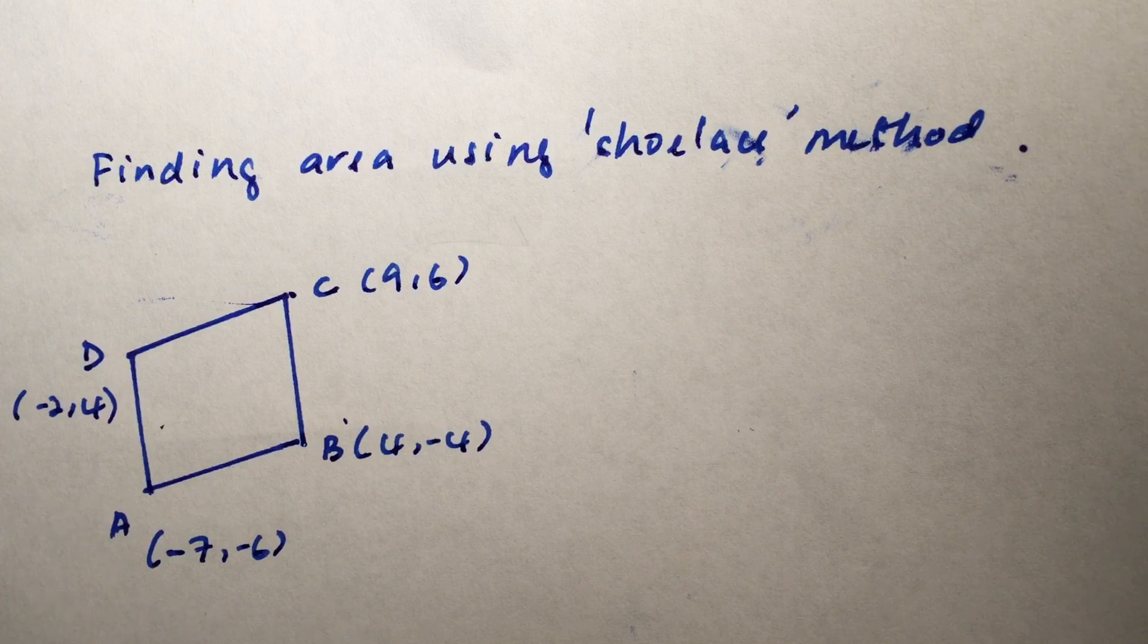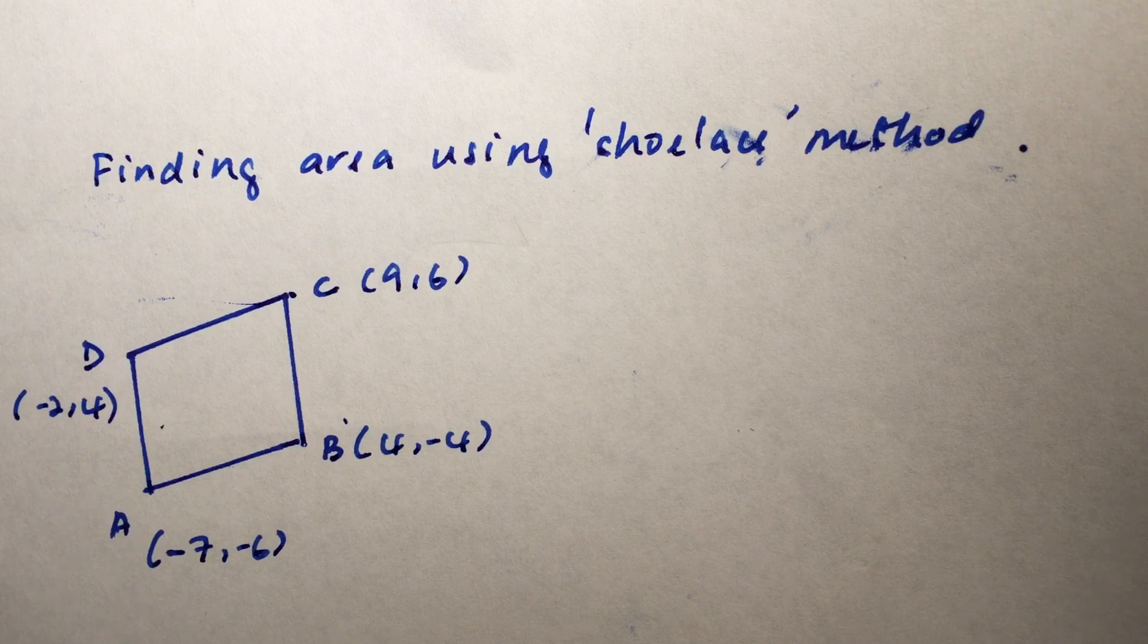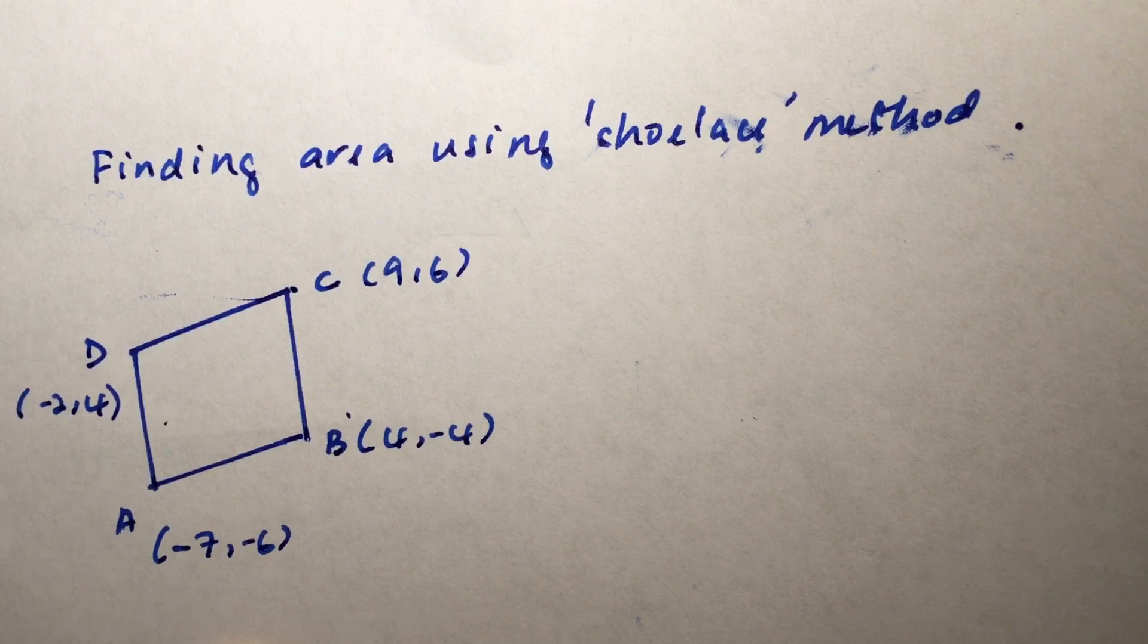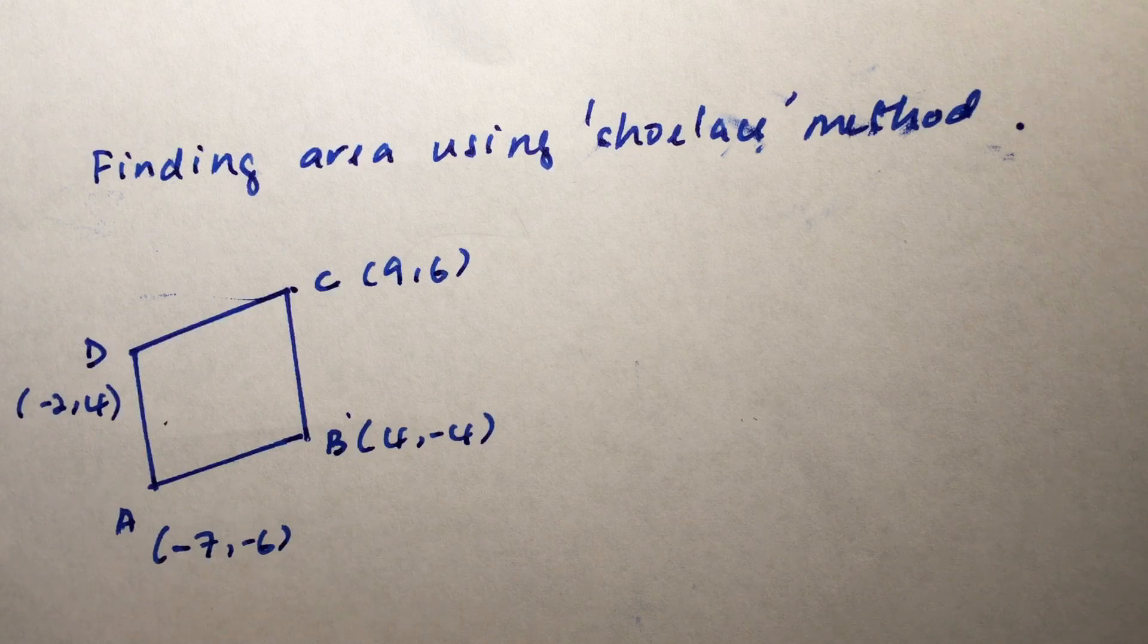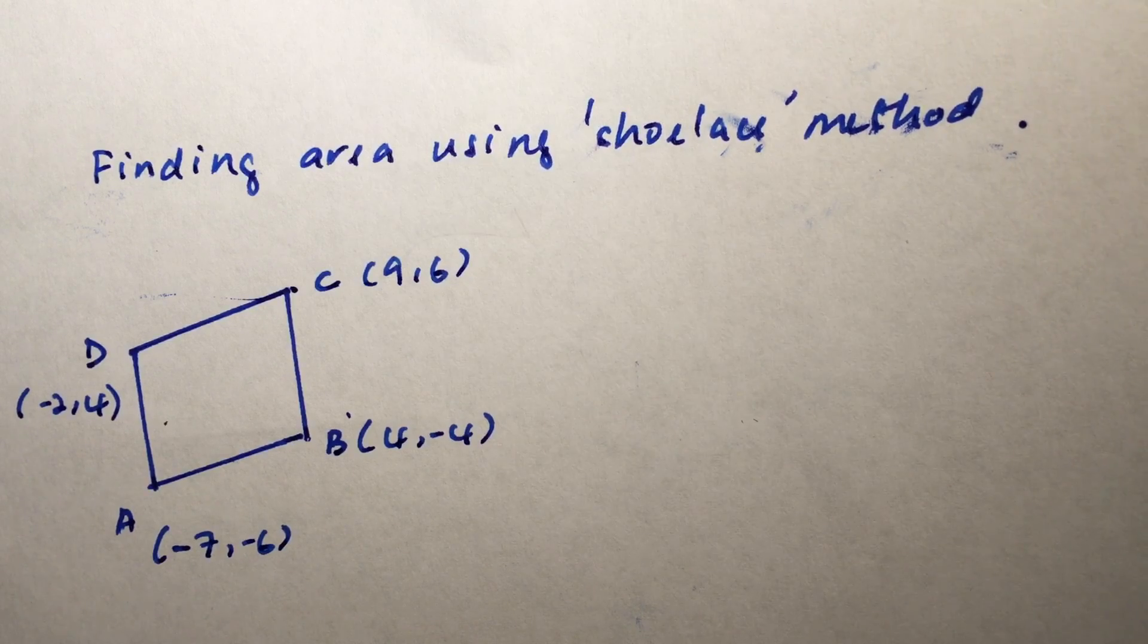Today we're going to learn how to find the area of a polygon using the Shoelace method. Let's use a case where we have a rhombus and the four coordinates are given.